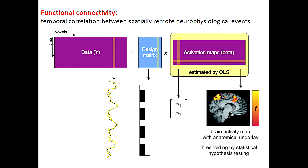How do we define functional connectivity? Functional connectivity is the temporal correlation between spatially remote neurophysiological events. We construct a design matrix from our data, which finally goes to activation maps, and we establish a threshold by statistical hypothesis testing.